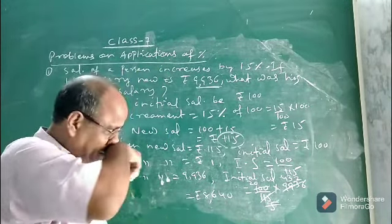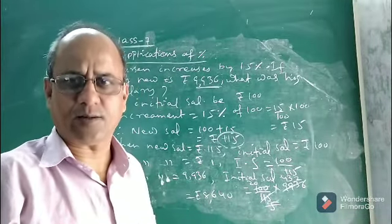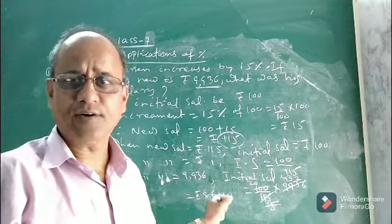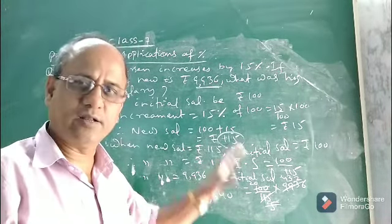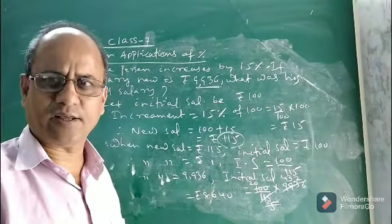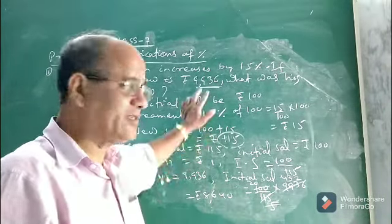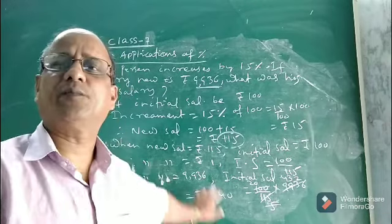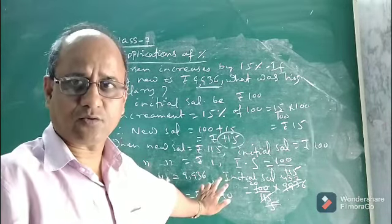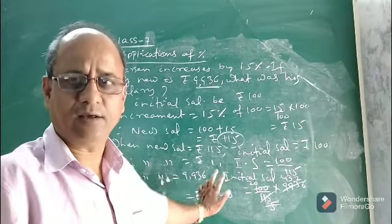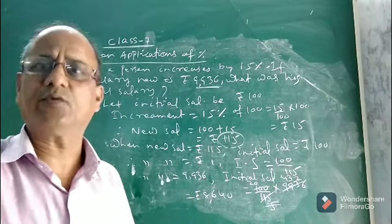So children, the initial salary of the person was rupees 8640. Before he was given an increment of 15%, his initial salary was 8640. We solved this particular question using the concept of unitary method. We can also do it using linear equation, but it is up to you which method you follow. I hope you understood this problem. We will discuss more problems in the next class. Thank you.